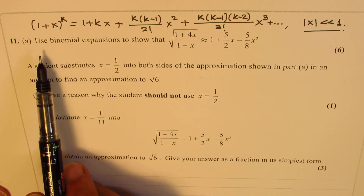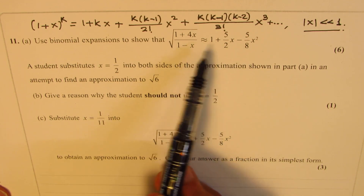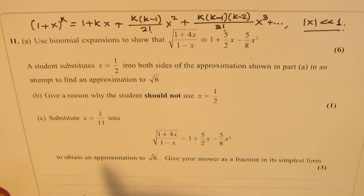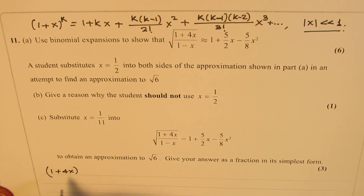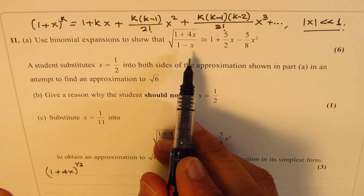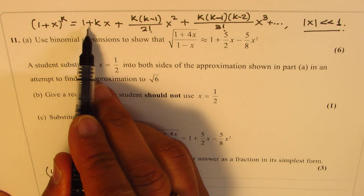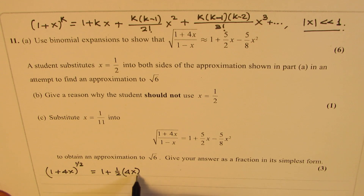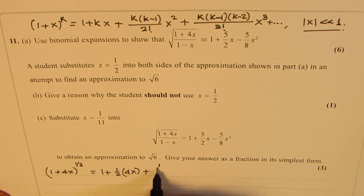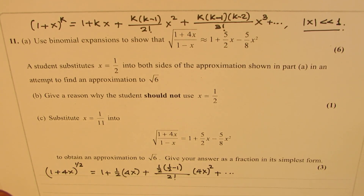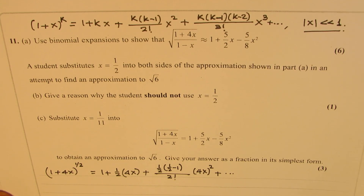Now let's use binomial expansion to show that the expression equals that result. We'll take the numerator and denominator separately. First we'll expand (1 + 4x)^(1/2) using the formula. Here k is one half and x is replaced by 4x. So we get 1 plus k times 4x, which is 2x, plus k(k−1)/2! times (4x)^2. That is one half times (negative one half) over 2 factorial times 16x squared. We neglect higher order terms.